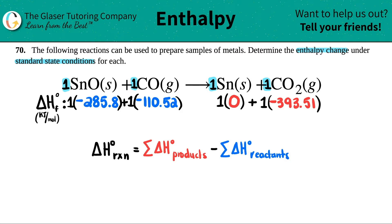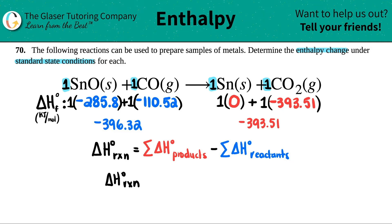Let's see: negative 285.8 minus 110.52. The total on the reactant side is negative 396.32. For the product side, it's just negative 393.51. Now I'm ready to plug into the formula: the sum of the products, negative 393.51, minus the sum of the reactants, which was negative 396.32. Remember, if you're subtracting a negative, it's keep, change, change — so you're just adding by a positive number.